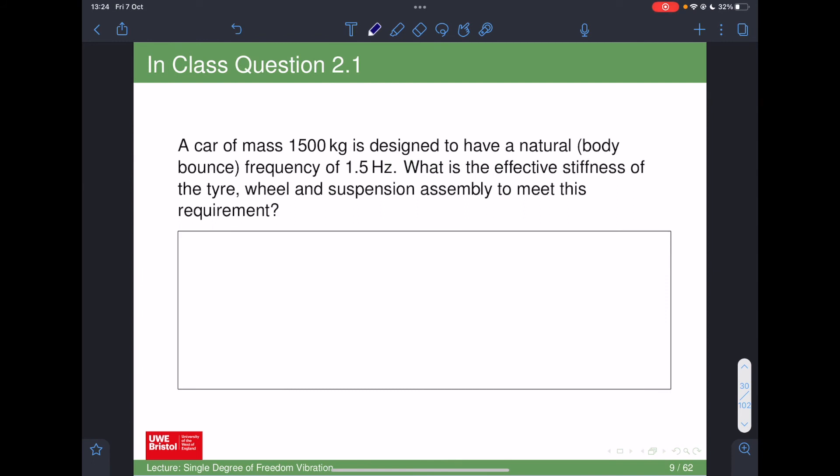The first in-class question: In the notes, you'll see there are some gaps associated with in-class questions. A car of mass 1500 kg is designed to have a natural body bounce frequency of 1.5 Hz. That's quite a good number because in terms of the frequencies we want for body bounce, you want it to be almost in line with the natural frequency of somebody walking. If you've got a different frequency that's either too high or too low, you end up with problems in terms of car ride quality. Natural body bounce of 1.5 Hz—what is the effective stiffness of the tyre, wheel, and suspension assembly to meet this requirement? So the bit between the body and the ground.